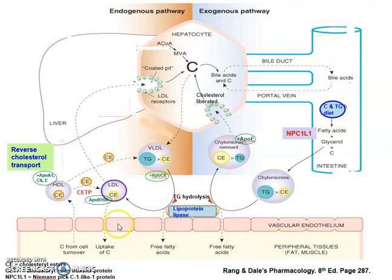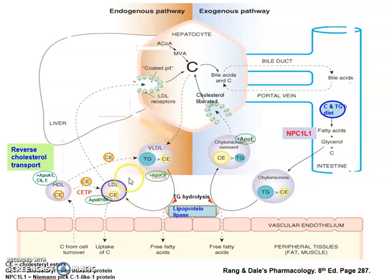That triglyceride from the VLDL moves into the adipose tissue and the muscle. Instead of forming a chylomicron remnant, we form LDL from VLDL. Our LDL can then be taken back up into the hepatocytes via LDL receptors, and the same processing can happen to our cholesterol.